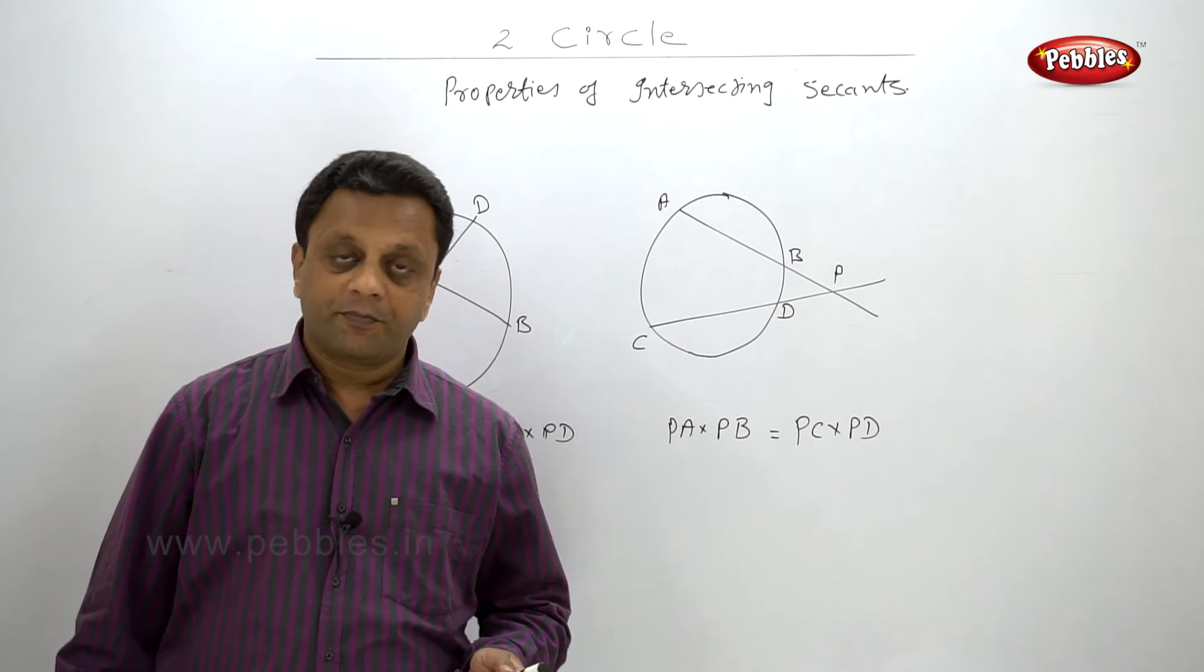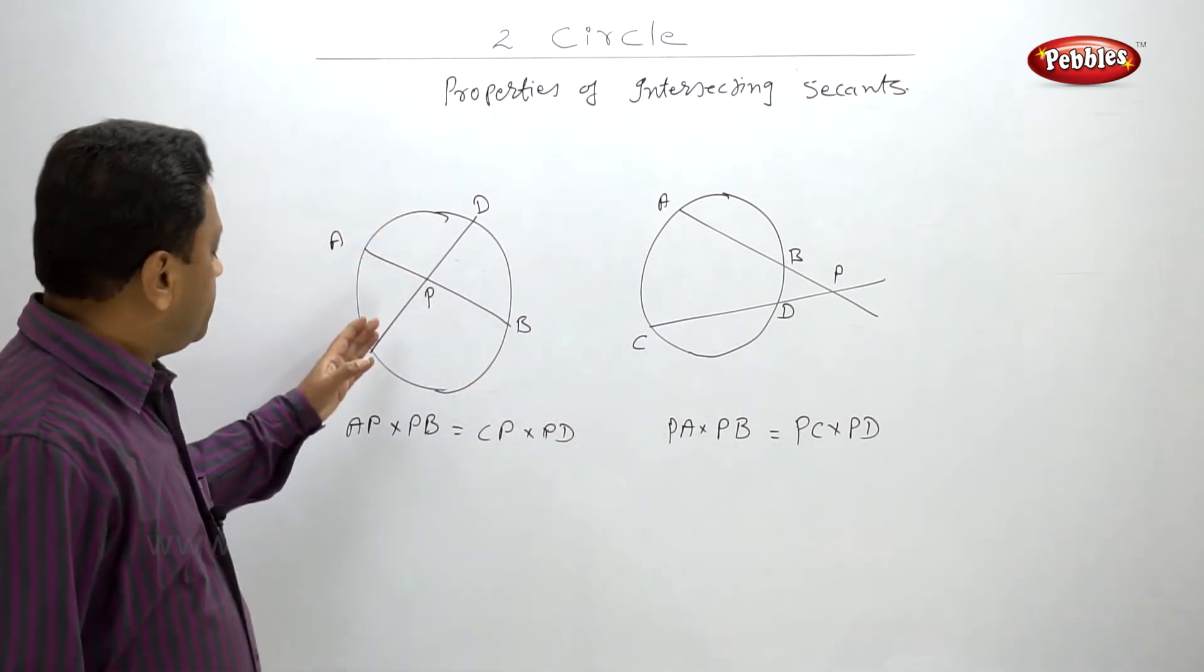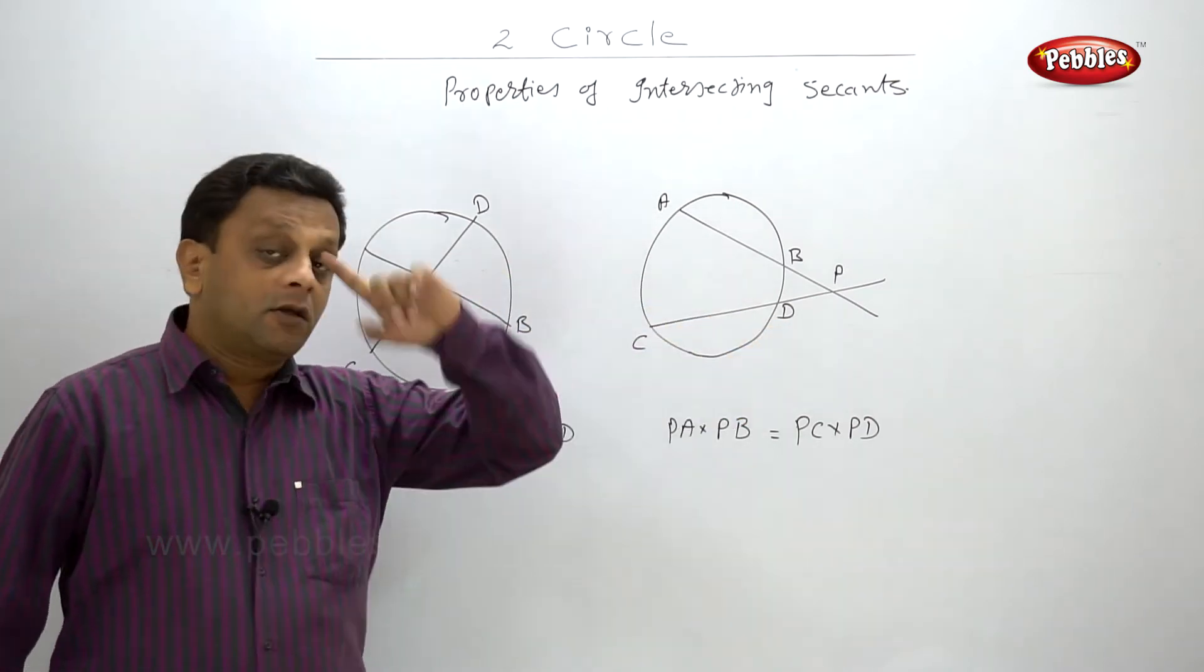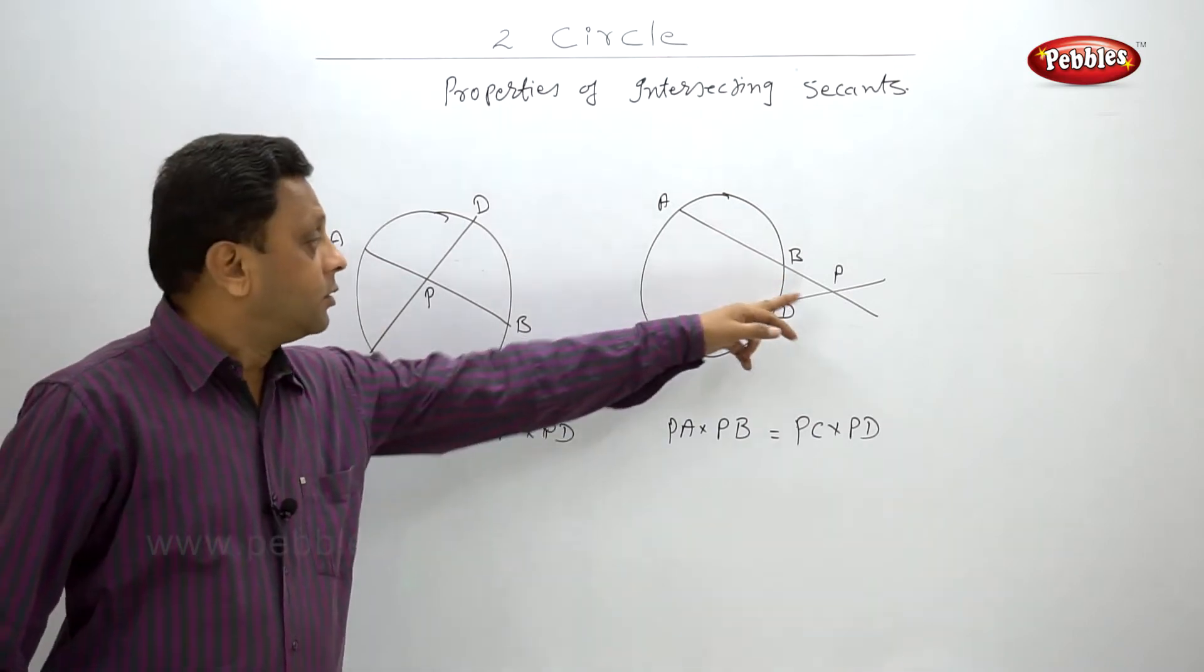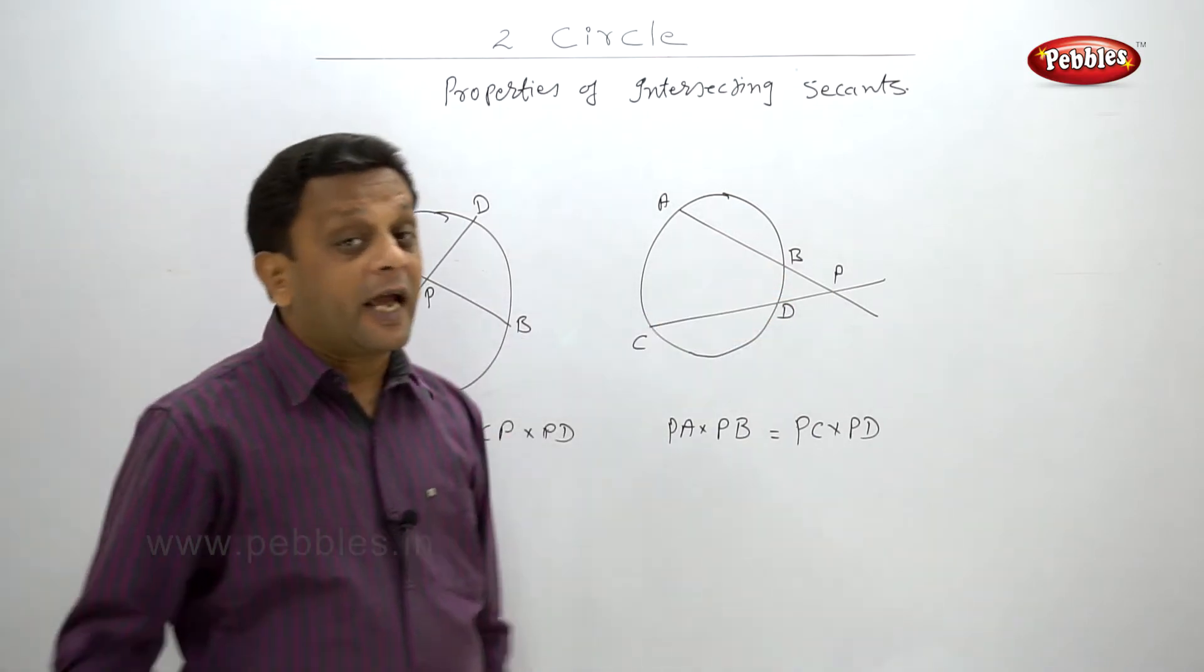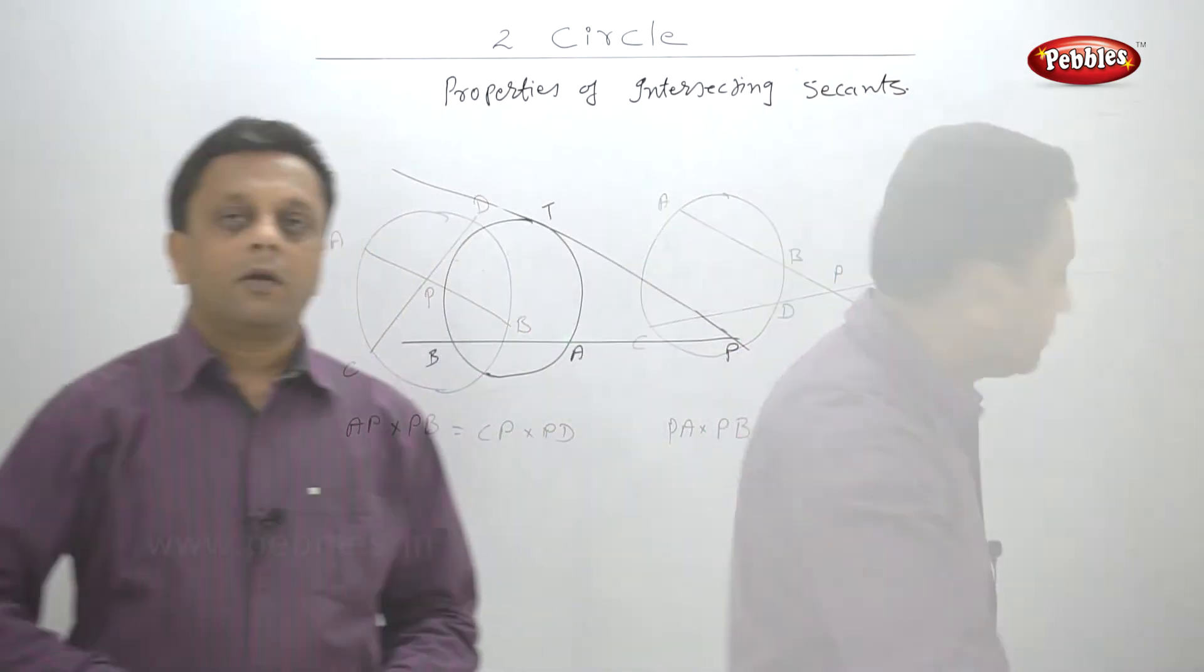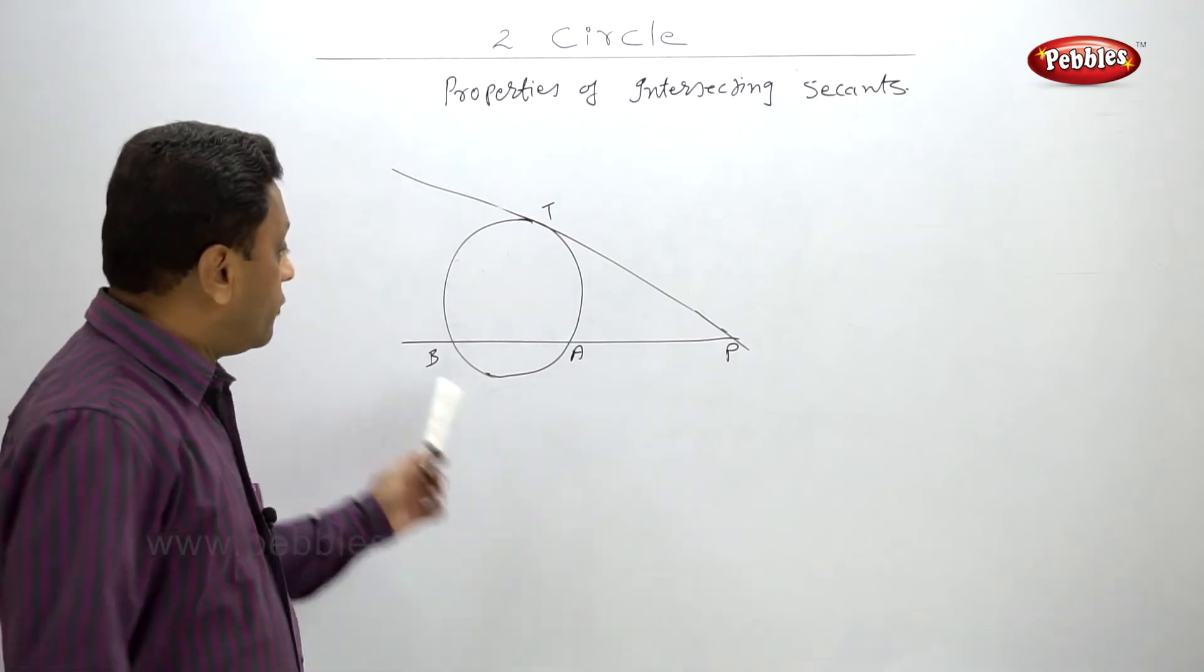Now the corollary to this - suppose we have seen both are intersecting inside circle, outside circle. The third condition is if one of this line is tangent to the circle, then what will happen. Let us see the corollary where one of the segment is tangent to the circle.